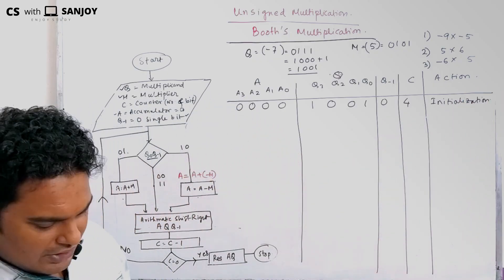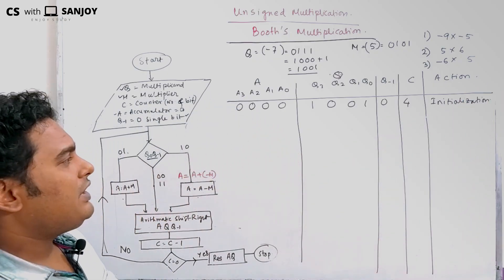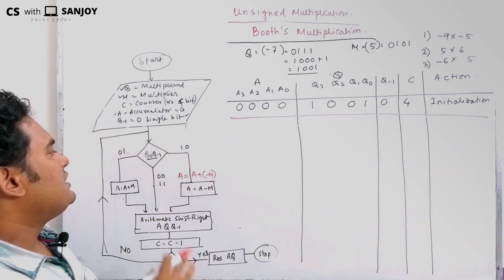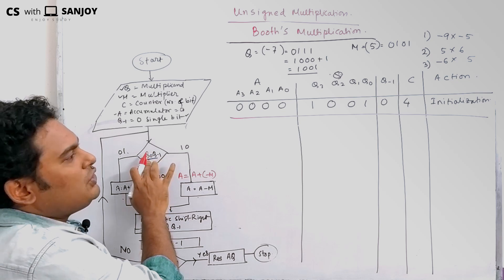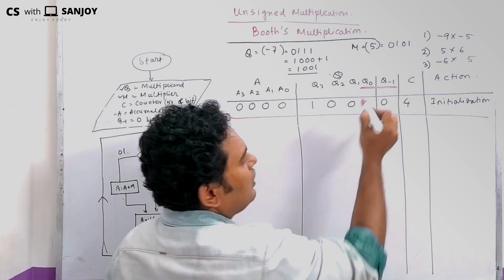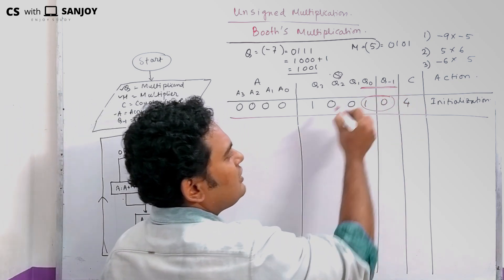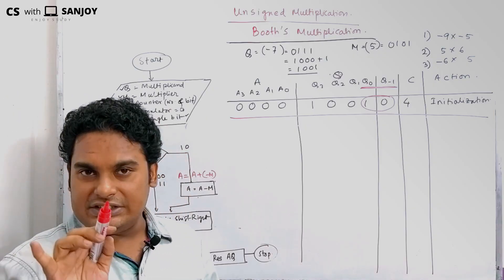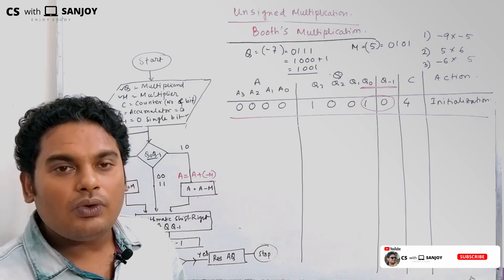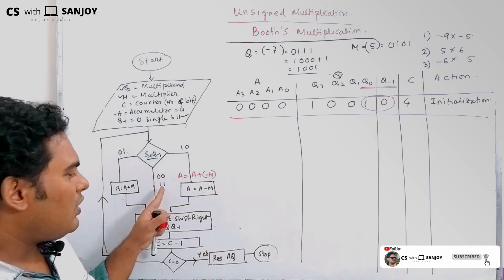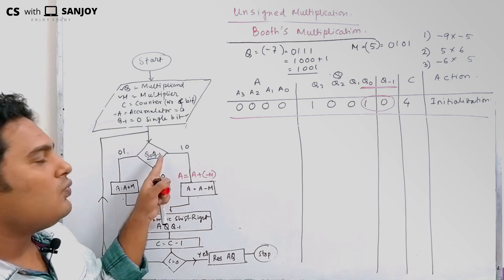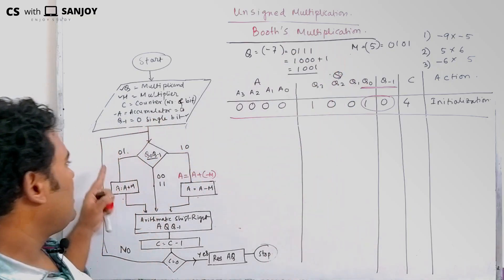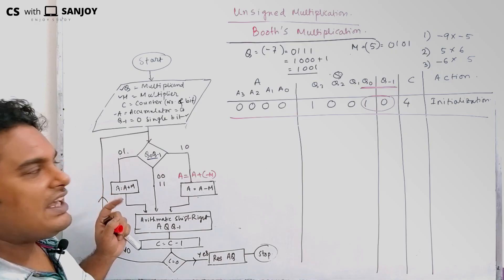Now the next step is to move on and look at the flow chart. We observe the pair Q0 and Q minus 1. The possible combinations are: 0,0 and 1,1 — do arithmetic shift right. 1,0 means A equals A minus M. 0,1 means A equals A plus M. Now the pair Q0 Q-1 is 1,0, so A equals A plus of minus M. M is 0101, so the 2's complement of M: 1's complement is 1010, plus 1 gives 1011. So 2's complement of M is 1011, which we add to the accumulator.